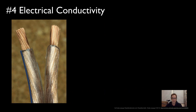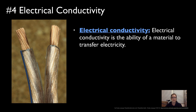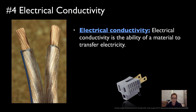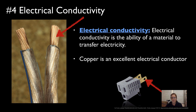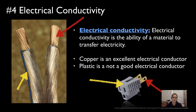Physical property number four is electrical conductivity — the ability of a substance to transfer electricity, meaning moving electricity from one place to another. We often wrap electric wires in plastic because copper is an excellent electrical conductor, but plastic is not a good electrical conductor. Instead, plastic will insulate the electricity.